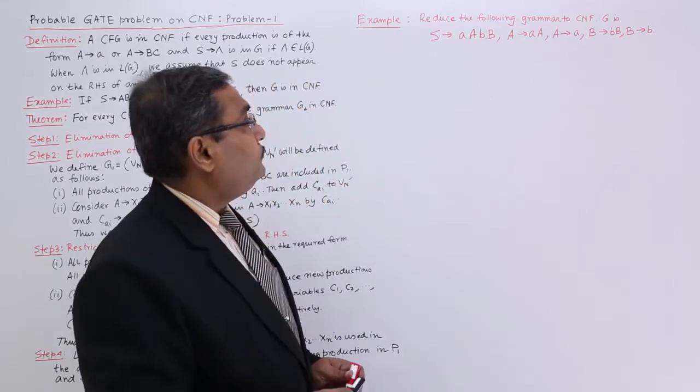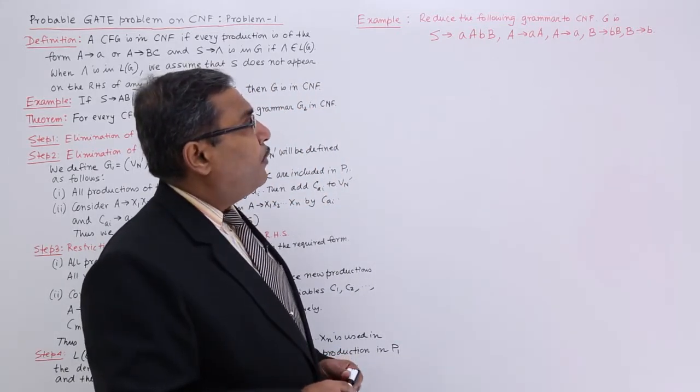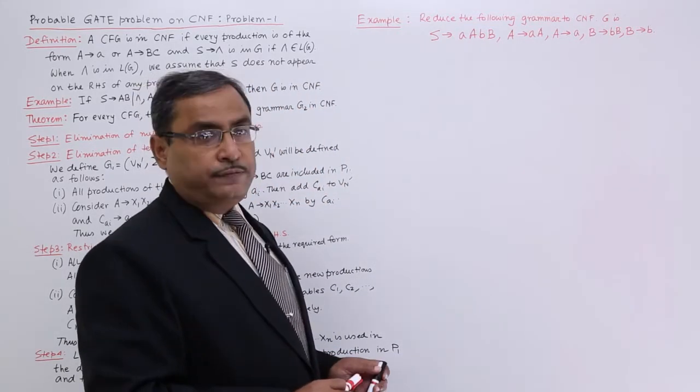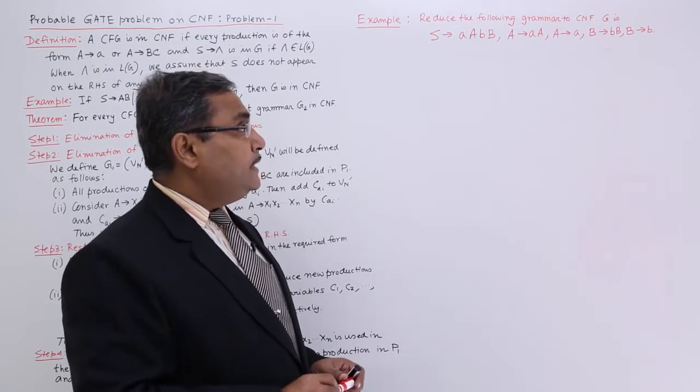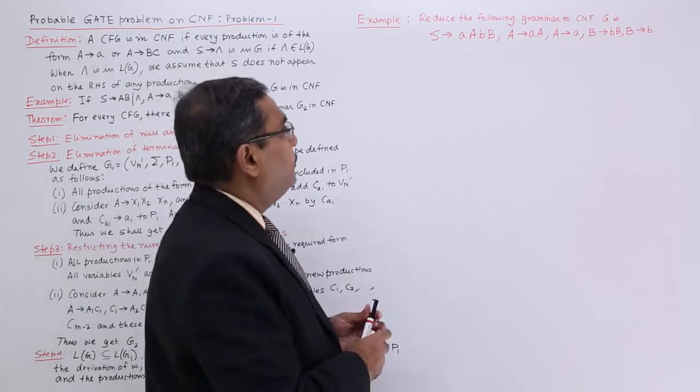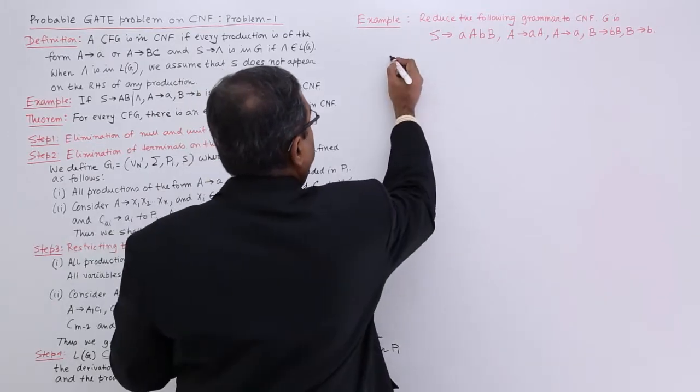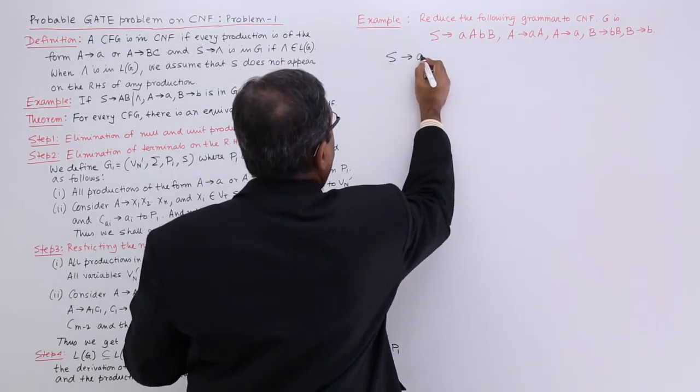We are given: reduce the following grammar to CNF. The grammar G with production rules are given. So let us solve it. My production rules are S produces AA.